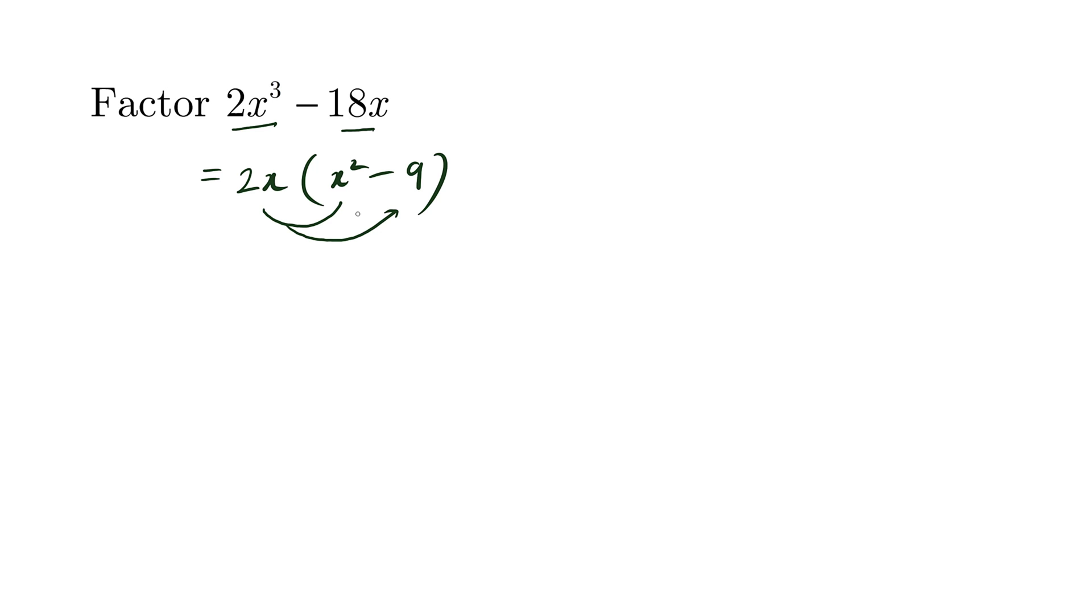Now please don't stop. Always look to see if you can factor further. So x squared minus 9, we recognize difference of squares. So we copy down the x's, plus 3 and minus 3. So now we have the expression in fully factored form.